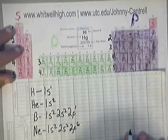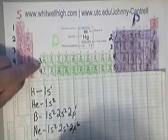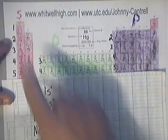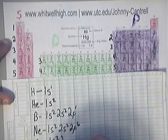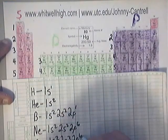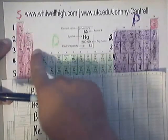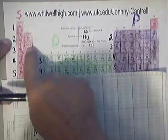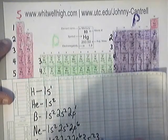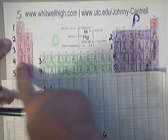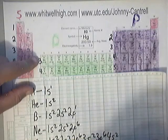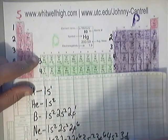The next example is scandium (Sc). For scandium, you pass up 1s², then 2s², then 2p⁶, then 3s², then you enter and exit 3p⁶, then pass up 4s², and finally land in 3d¹. So the full electron configuration for scandium is 1s², 2s², 2p⁶, 3s², 3p⁶, 4s², 3d¹.